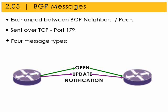Notification: this message is sent when an error occurs during a BGP session and when the session is to be closed. The BGP session is closed immediately upon sending the notification message. Keep Alive: this message is sent as an alternative to update messages to maintain the BGP session and to satisfy the initially negotiated hold time requirement. The Keep Alive message indicates that the connection between two peers is still active. The maximum time for a Keep Alive message is one third of the hold interval.